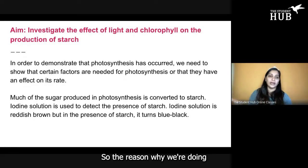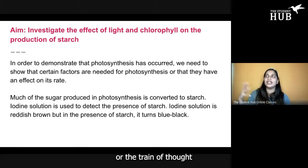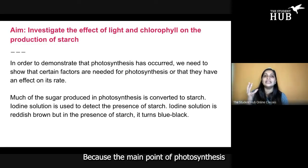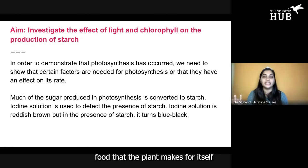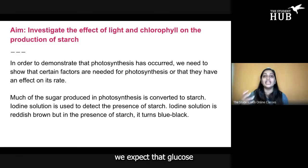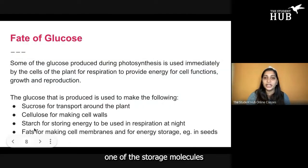The reason why we're doing this experiment is because if a plant is photosynthesizing, we expect that it will make glucose. The main point of photosynthesis is to make food for the plant, and the specific food the plant makes for itself is glucose. Once the plant is photosynthesizing, we expect glucose would have been made, and one of the storage molecules for glucose is starch.